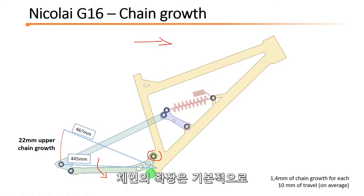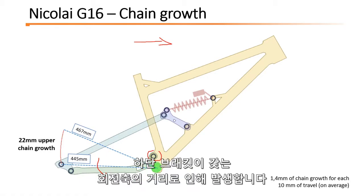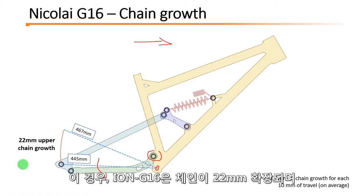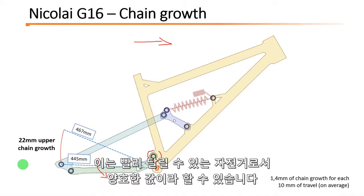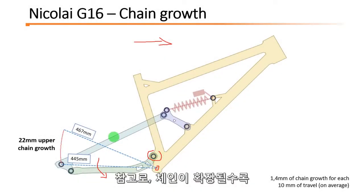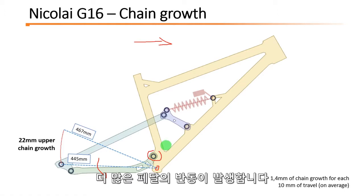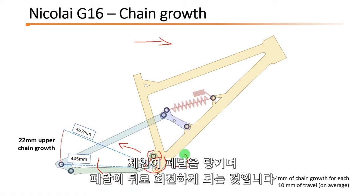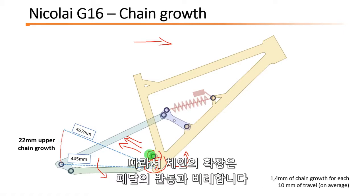The chain growth is basically the result of this distance — the bottom bracket to axle distance. And as you can see, this distance increases during the travel. In this case the G16 has 22 millimeters of chain growth, which is a good value for a bike that pedals so well. Both ION G16 and G13 have a very similar chain growth profile. Just a small note: the more chain growth you have, the more pedal kickback you have, because the chain is pulling back the pedals. So chain growth is proportional to pedal kickback.